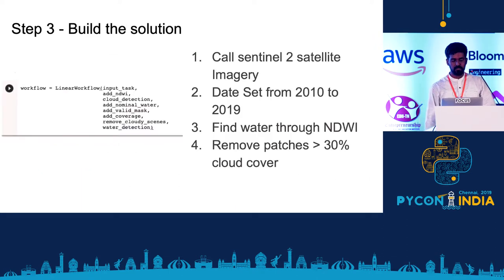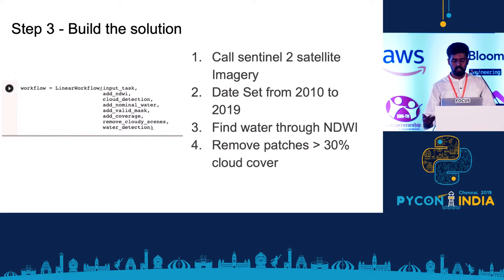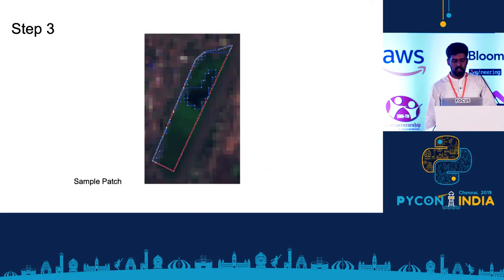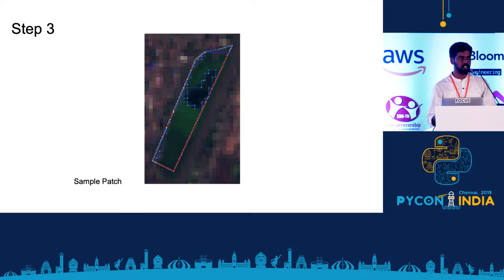I built a workflow like this: Sentinel satellite images, a dataset from 2010 to 2019, then found water through NDWI, and removed patches with more than 30% cloud cover since I can't get any useful inference from them. This is a sample output I got — the red indicates my area of interest and the blue indicates the water available in each of them.